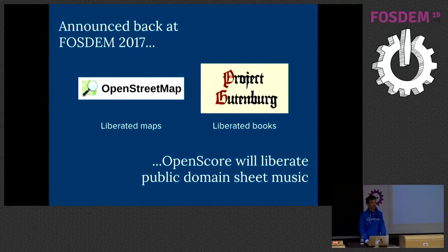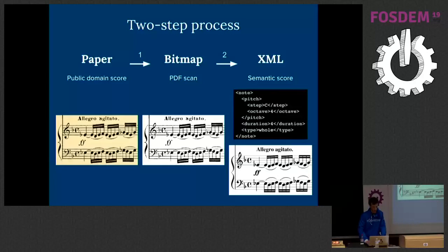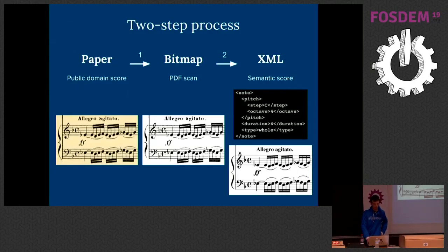We were last here at FOSDEM 2017 where we announced OpenScore to the world. Our mission is to basically do what OpenStreetMap did for maps or Project Gutenberg did for books — we want to do the same for sheet music, and specifically public domain sheet music. This involves a two-step process to create open source sheet music.